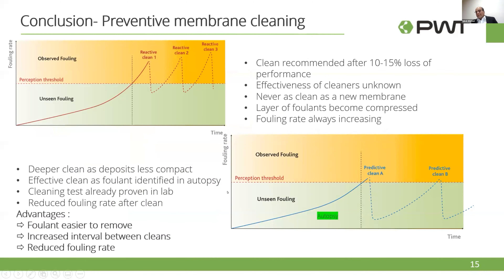Usually there is fouling happening when you start the plant that you cannot see — it's called unseen fouling. When you start to observe it on the graph, the TMP goes up, you clean and it comes down, but the overall trend keeps going up. If you do not control your cleaning regime in this area, you can get this kind of progressively worsening graph.